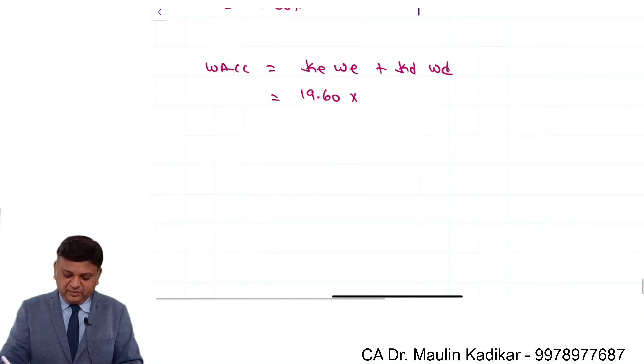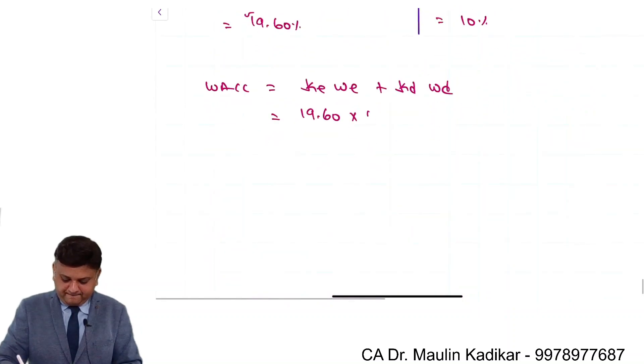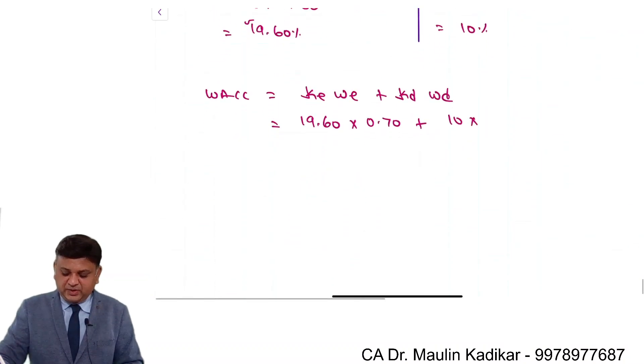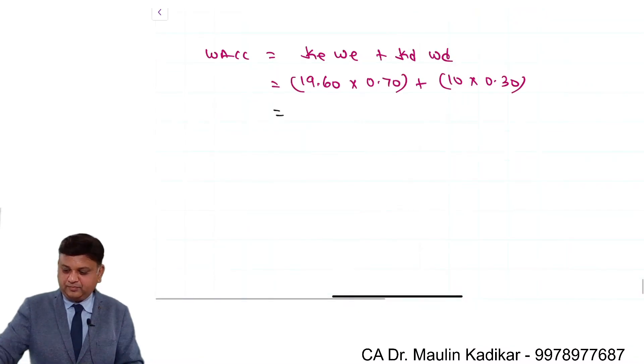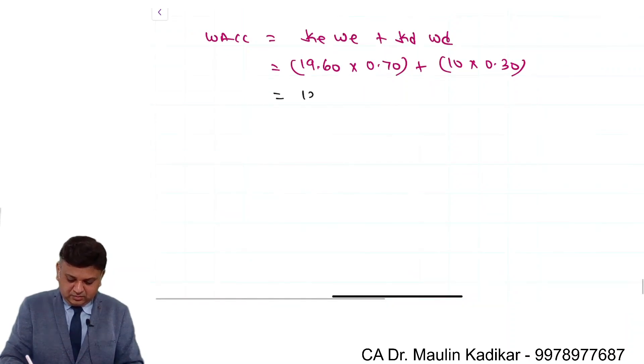into weight of equity is 0.70, cost of debt finance is 10, weight is 0.30. So 19.6 into 0.7 is 13.72 plus 3, 16.72.